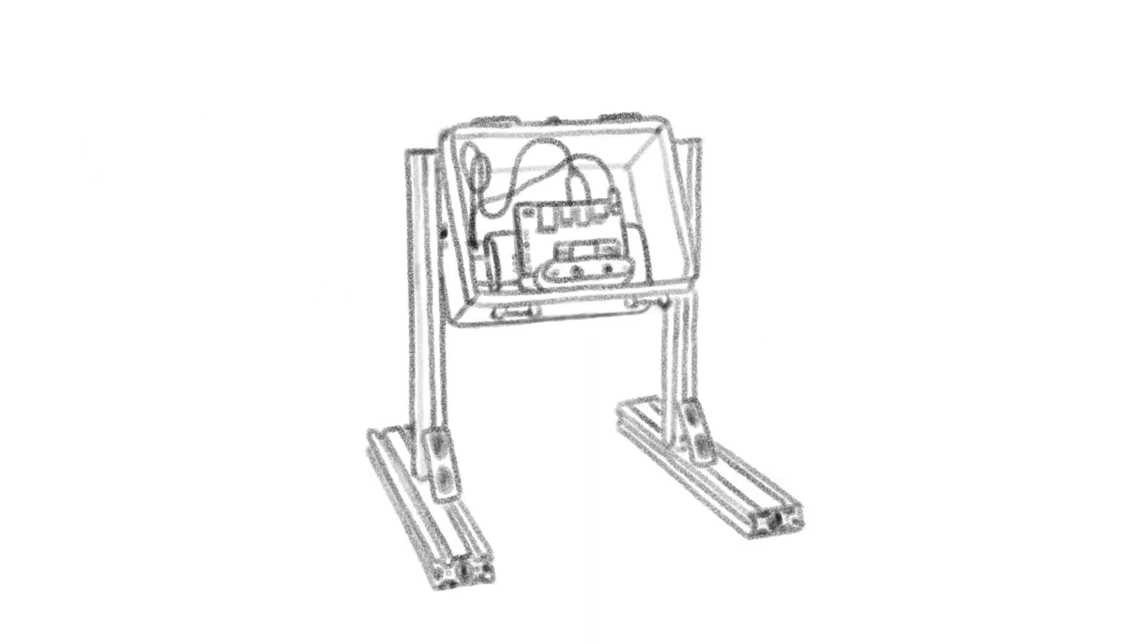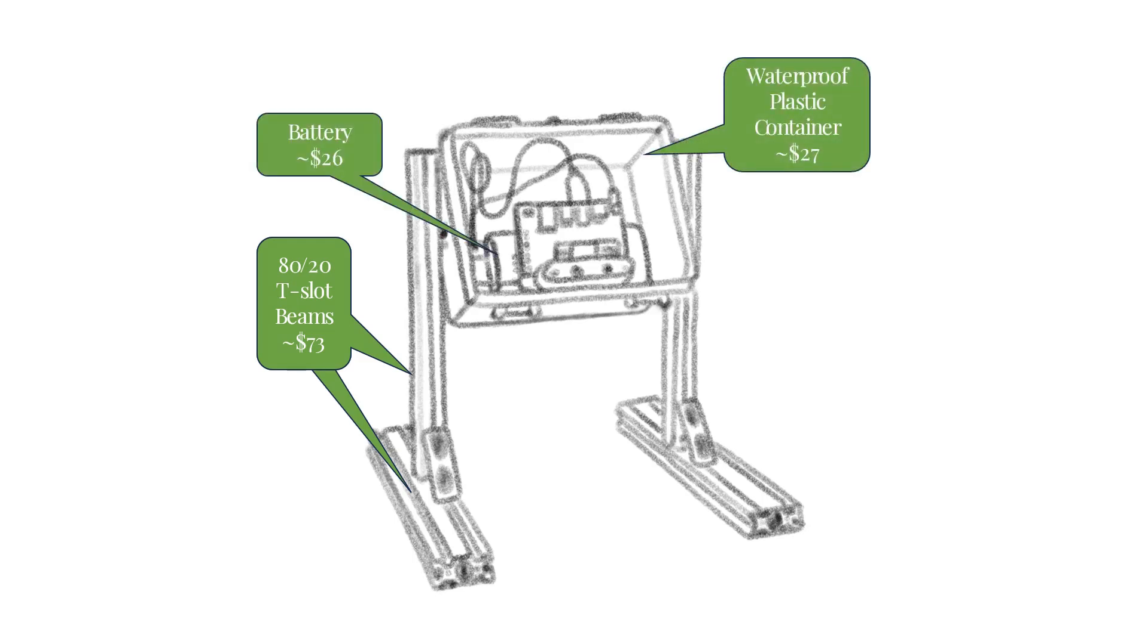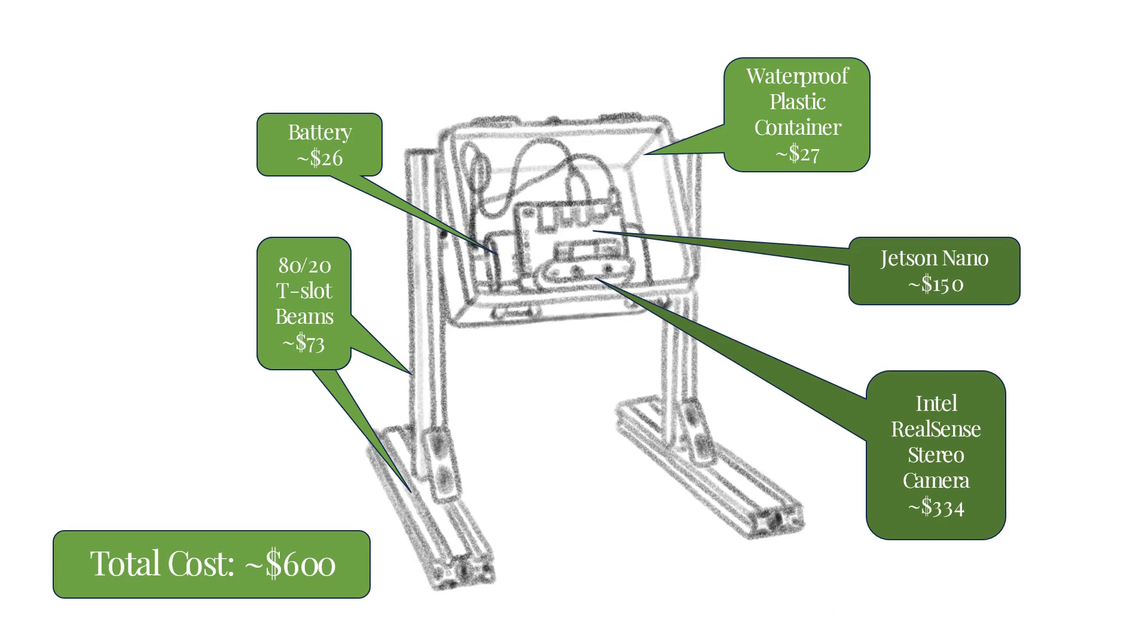Our design consists of five main components: an aluminum support structure, a weatherproof plastic container to protect electronics, and a battery to power the electronics. Most importantly, our device contains an Intel RealSense stereo camera to measure depth and a Jetson Nano computer board to autonomously control the camera and perform calculations.